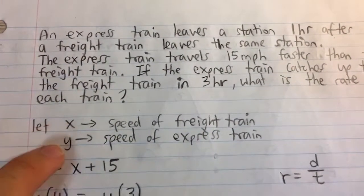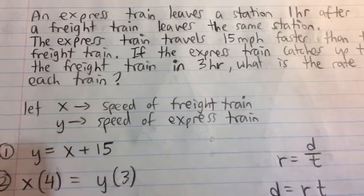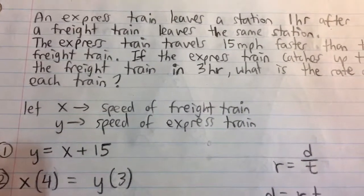First off, I'm going to set some variables for the speed of each train. Let's say x is the speed of the freight train and y is the speed of the express train.